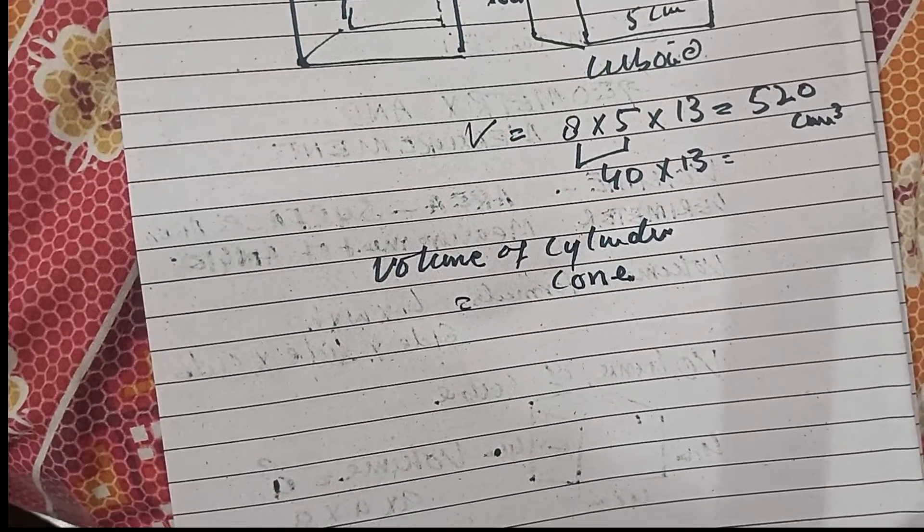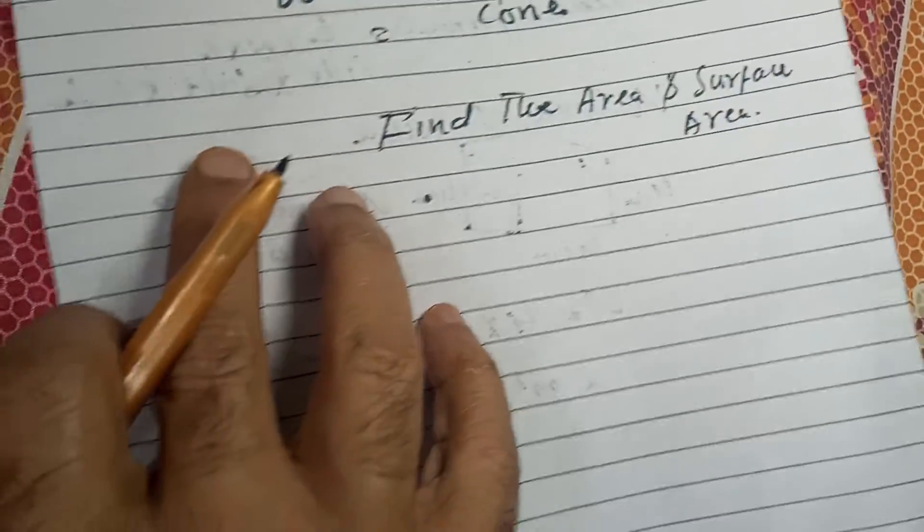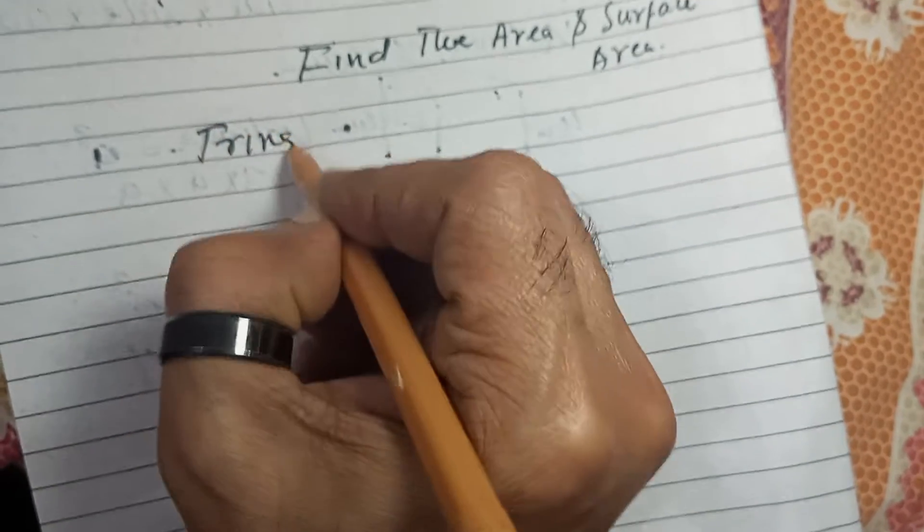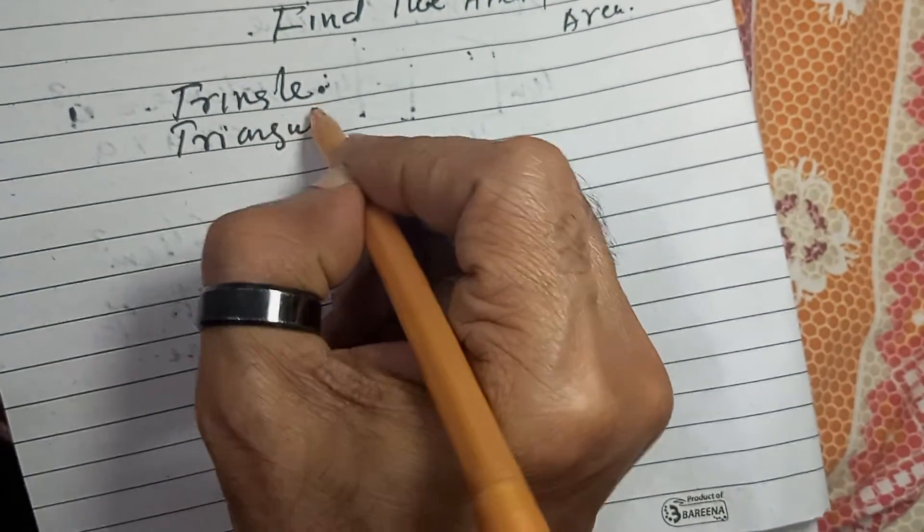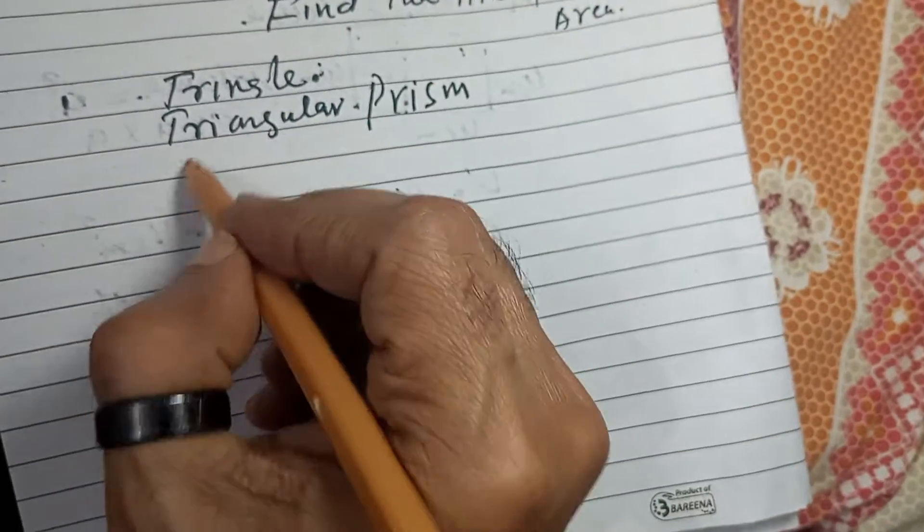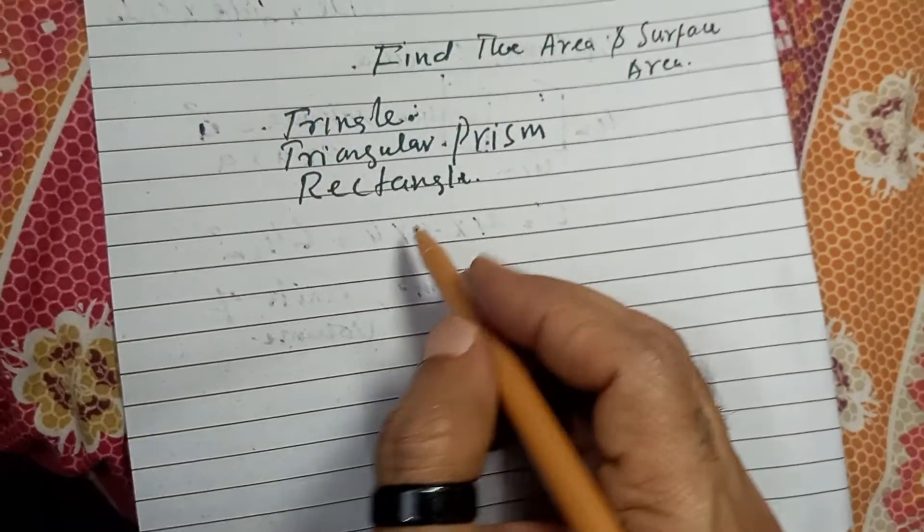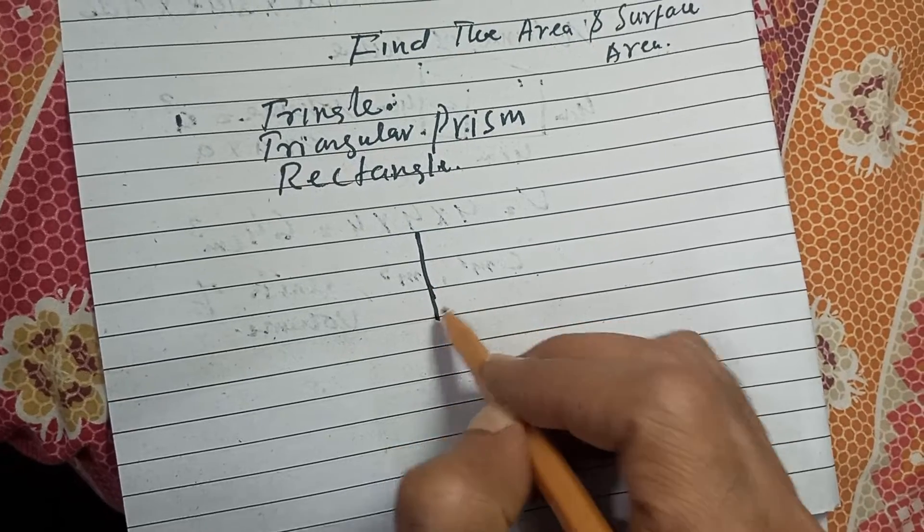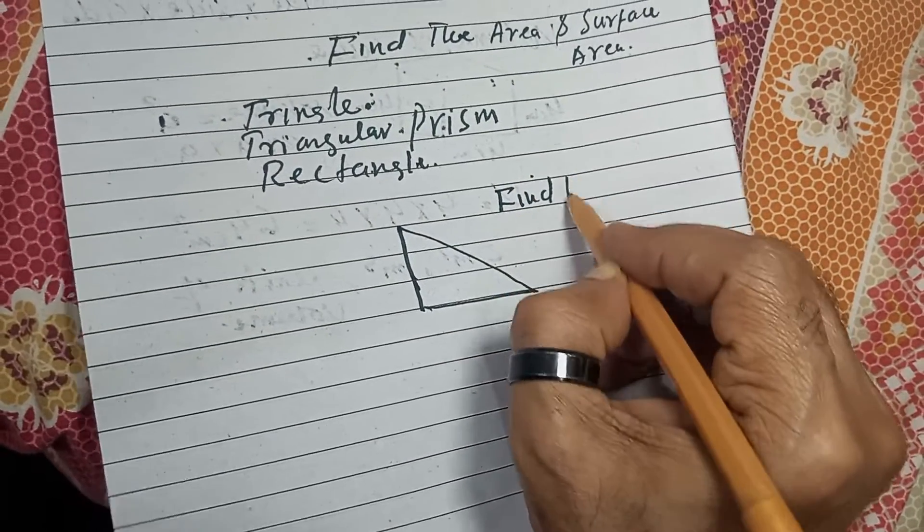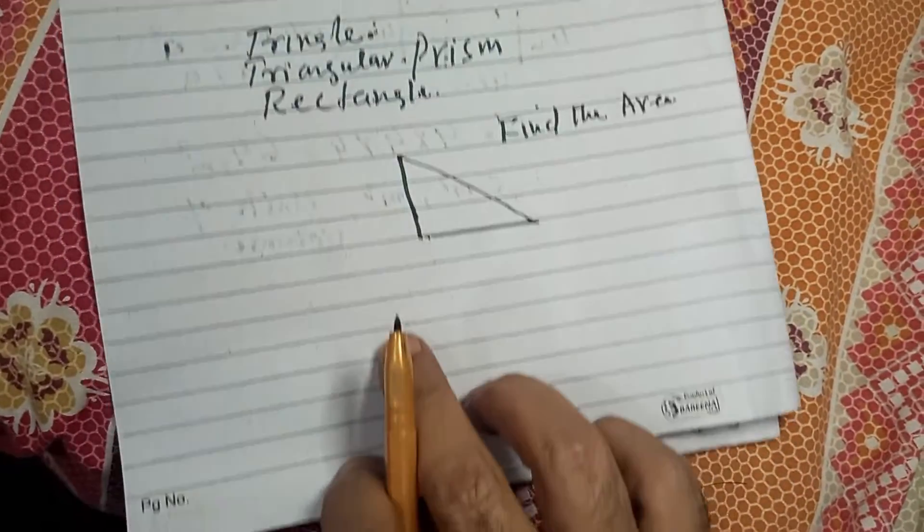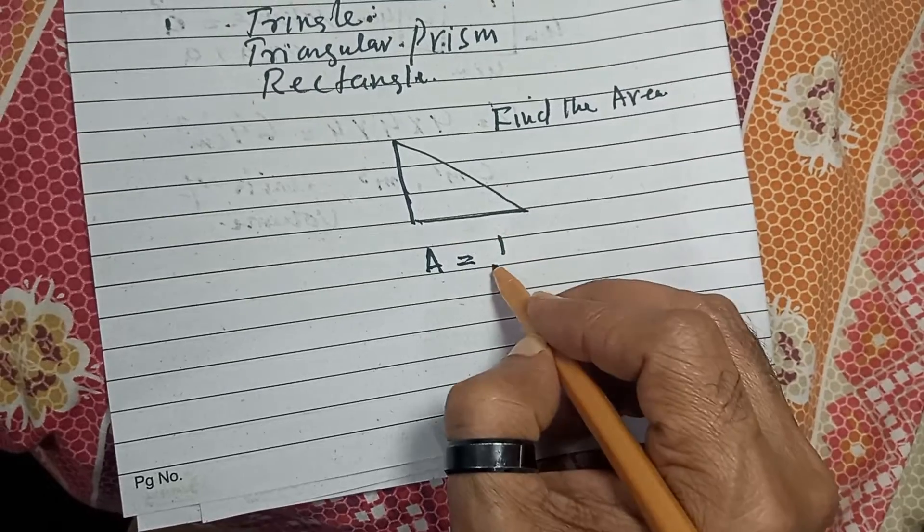We'll move to the next problem which is related with area. Now we'll find the area and surface area: area of triangle, triangular prism, and rectangle.